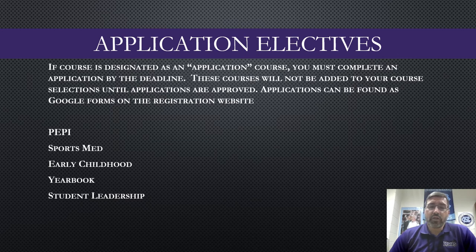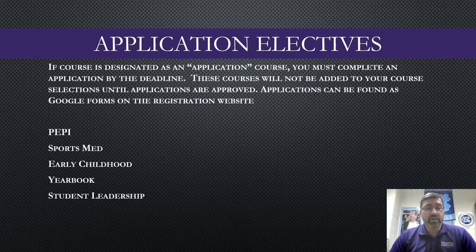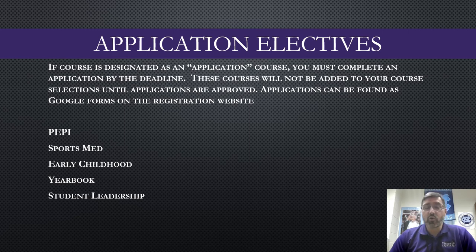There are a few elective courses available to upperclassmen that you won't see on the PowerSchool course selection page — these are our application classes. PAPE, Sports Med, Early Childhood, Yearbook, and Student Leadership are courses available to upperclassmen that won't be in PowerSchool. These applications can be found on our website on our course registration page, so if interested please visit that site.